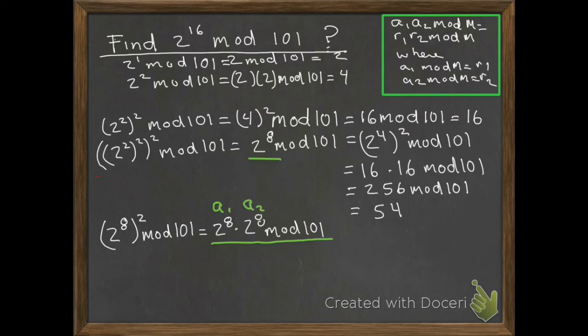The first 2^8 is a1, the second 2^8 is a2. We know that a1 times a2 mod 101 equals r1 times r2 mod 101. We have the result of 2^8 mod 101, which is 54, so we use that.